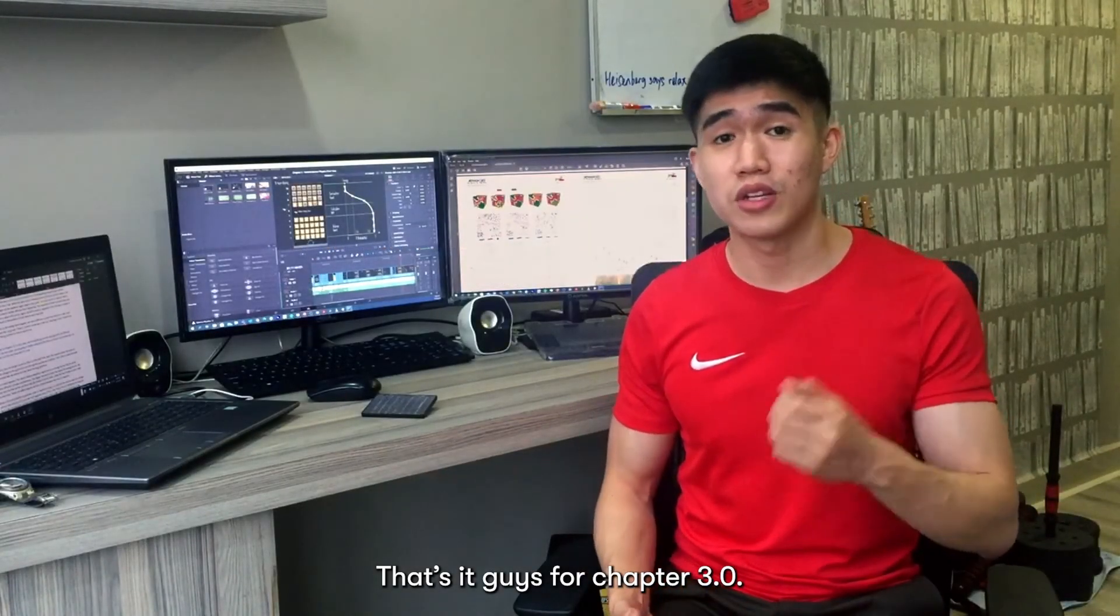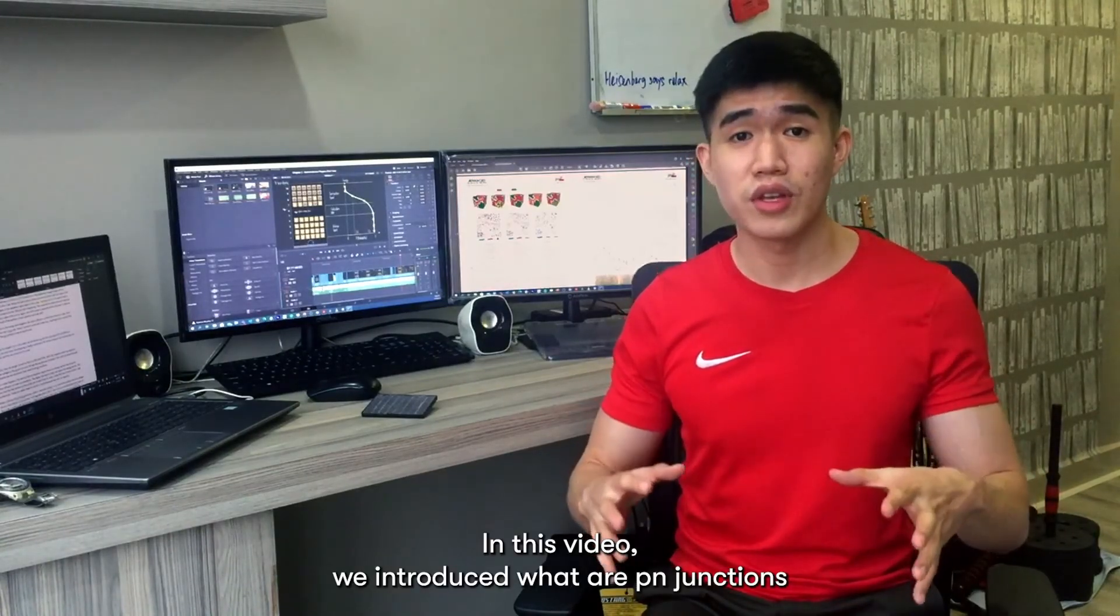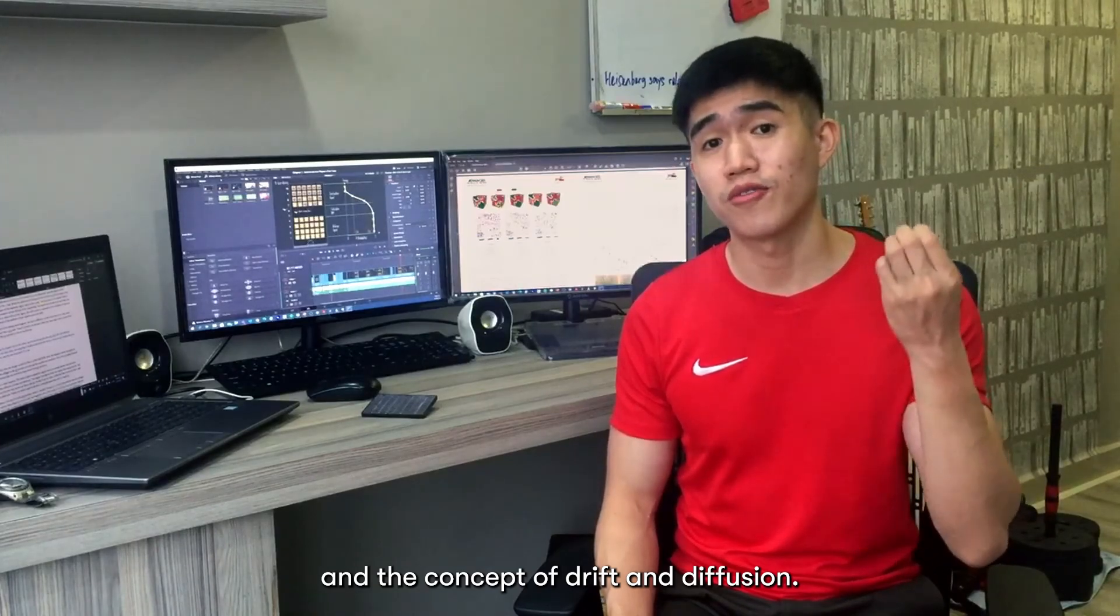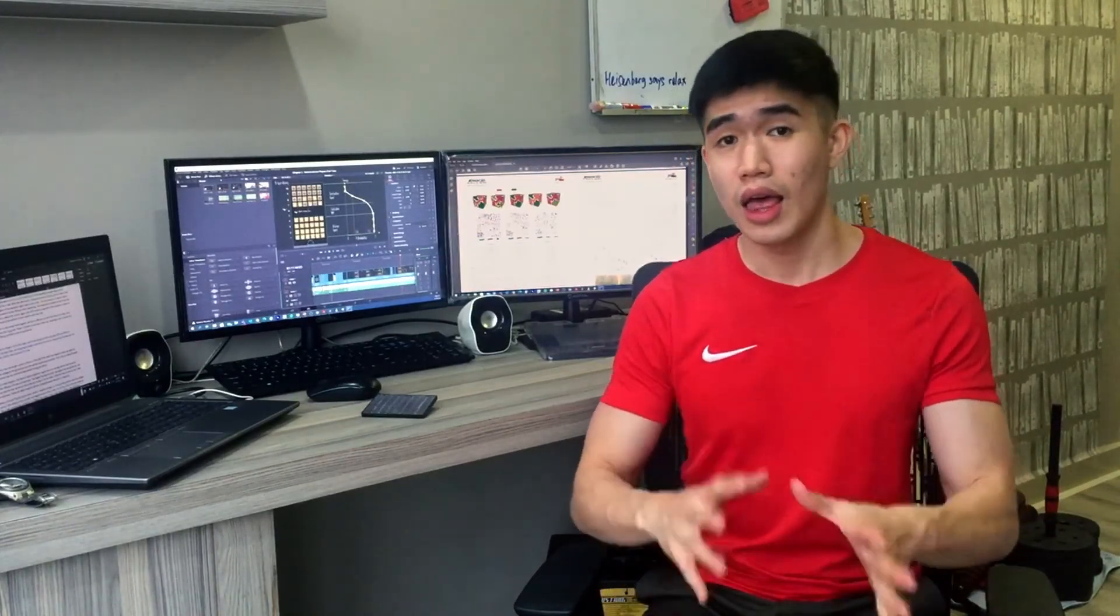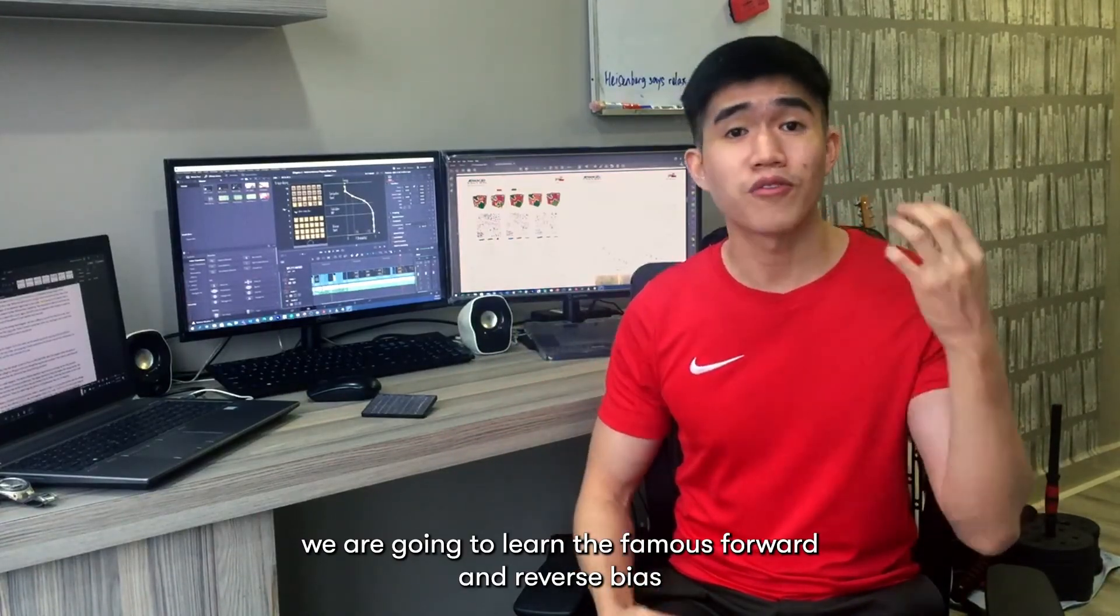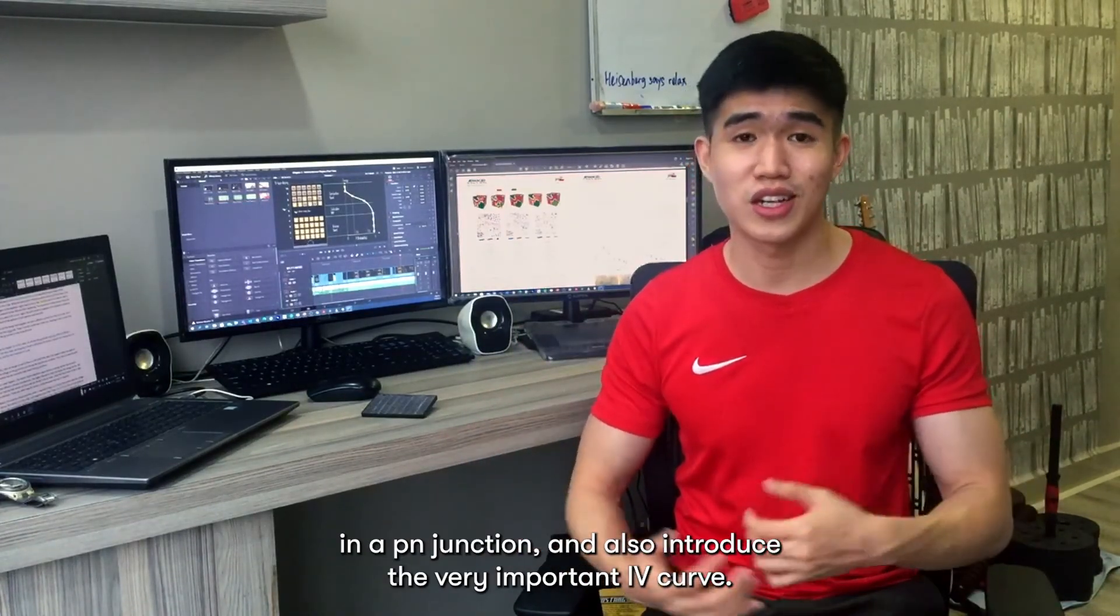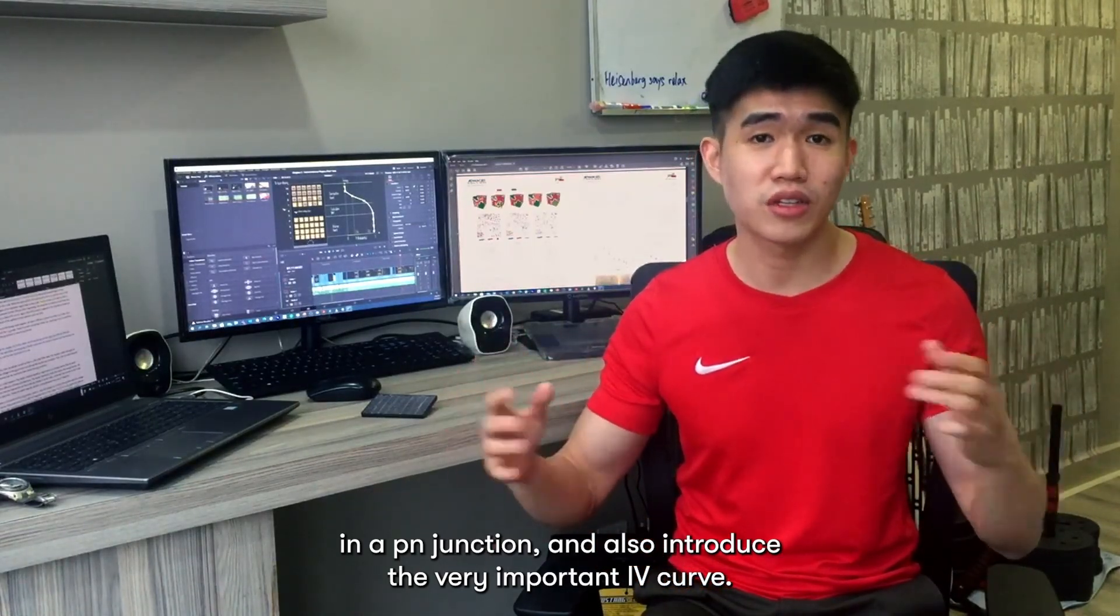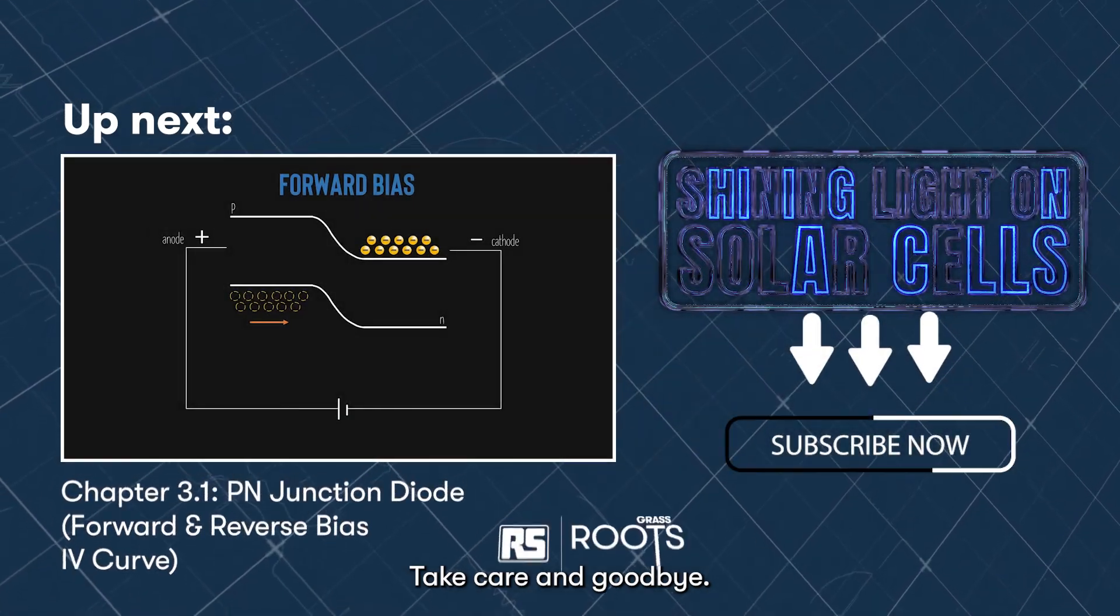That's it guys for chapter 3.0. In this video, we introduced what are p-n junctions and the concept of drift and diffusion. In the next video, which is chapter 3.1, we are going to learn the famous forward and reverse bias in a p-n junction, and also introduce the very important IV curve. Take care and goodbye.